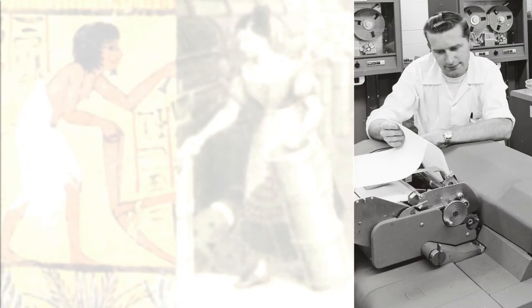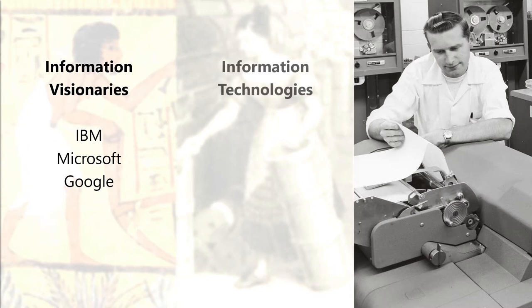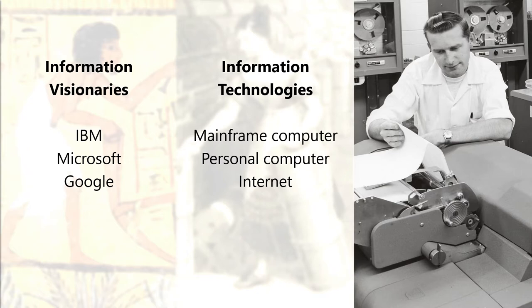During the information revolution, we had visionary companies like IBM, Microsoft, and Google. They all capitalized on the key technologies of the information age. As a result, they became some of the wealthiest and most powerful corporations on the planet.